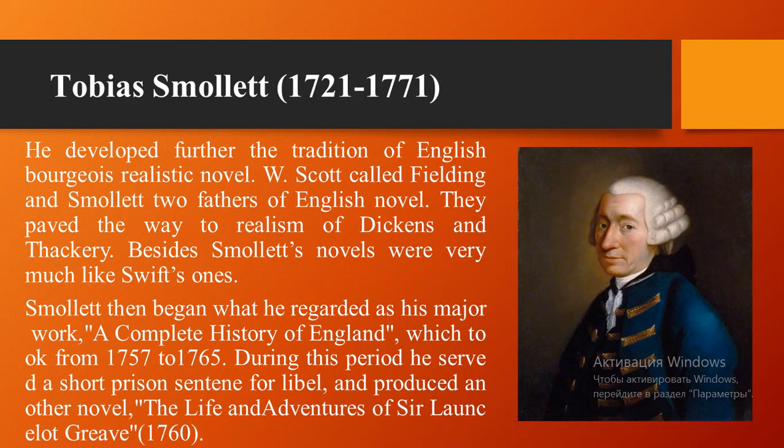Tobias Smollett developed further the tradition of the English bourgeois realistic novel. William Scott called Fielding and Smollett the two fathers of the English novel. They paved the way to the realism of Dickens and Thackeray. Smollett's novels were very much like Swift's. He began what he regarded as his major work, A Complete History of England, which took from 1757 to 1765. During this period, he served a short prison sentence for libel and produced another novel, The Life and Adventures of Sir Lancelot Greaves. Having suffered the loss of a daughter, he went abroad with his wife, and the result was his Travels through France and Italy.